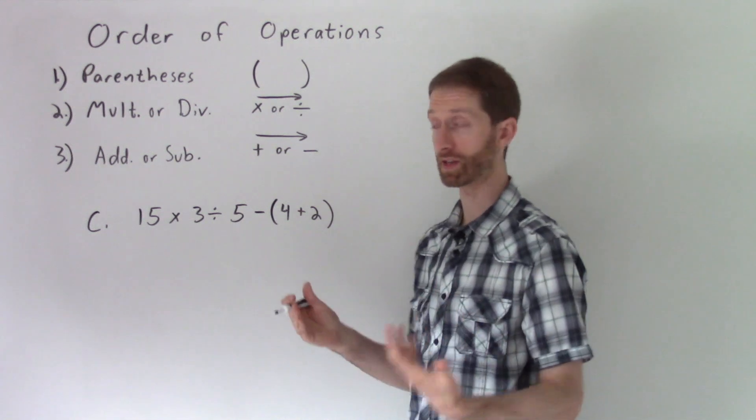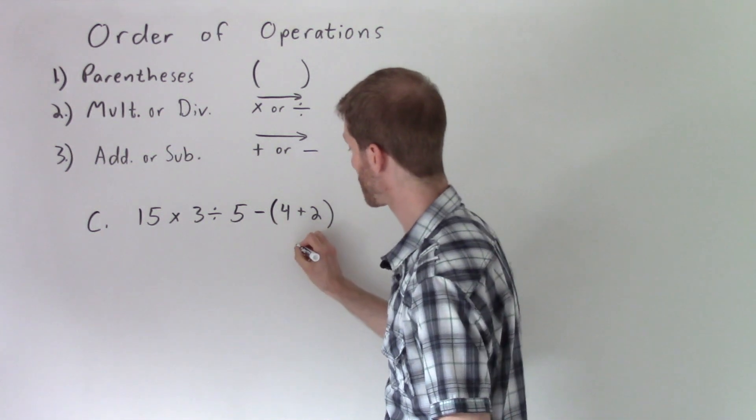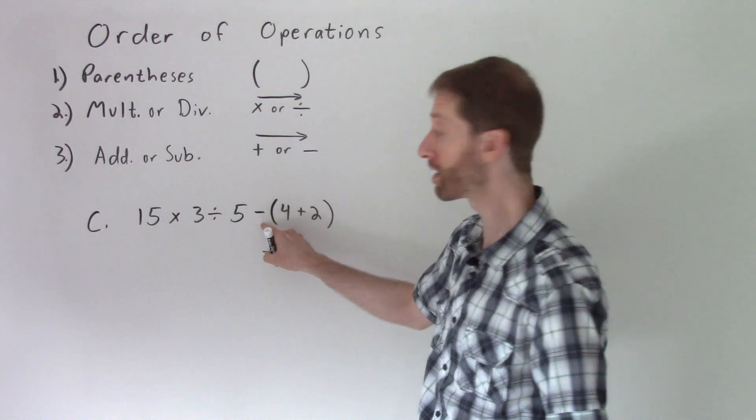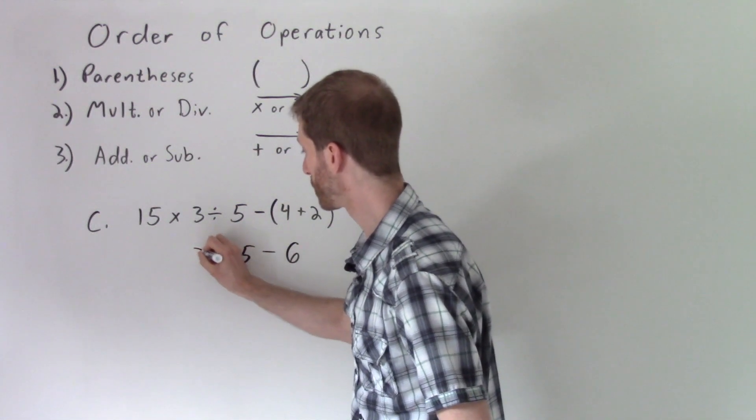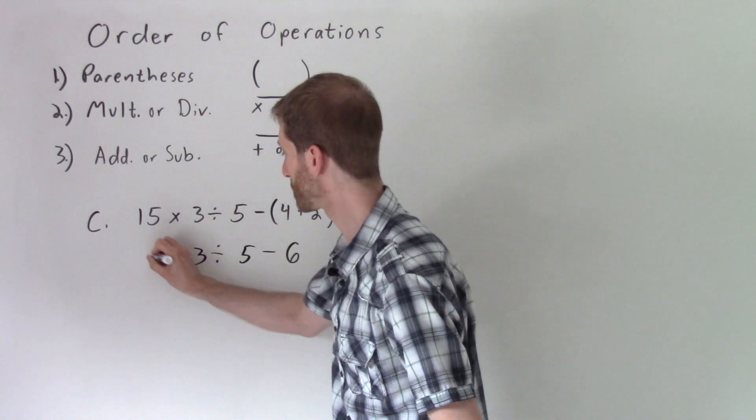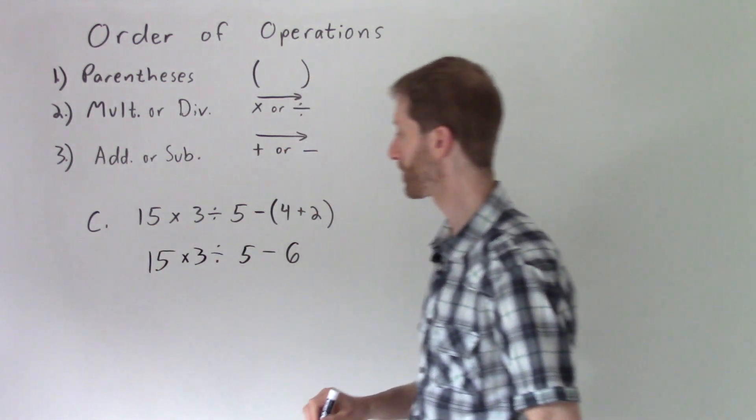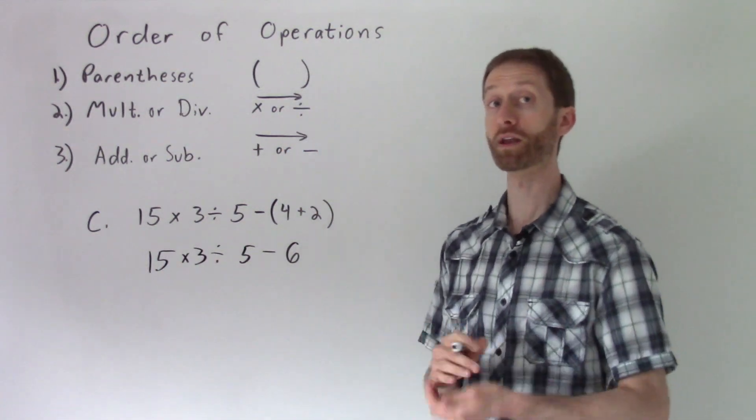4 plus 2 is 6. Everything else gets written down. So you evaluate the 6. The minus still stays there. The 5 drops down. The division sign. Everything. You could write it backwards, forwards. It doesn't matter. Remember that you are copying everything that you have yet to operate on.